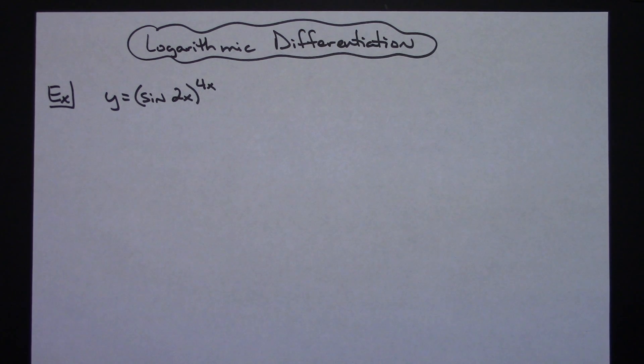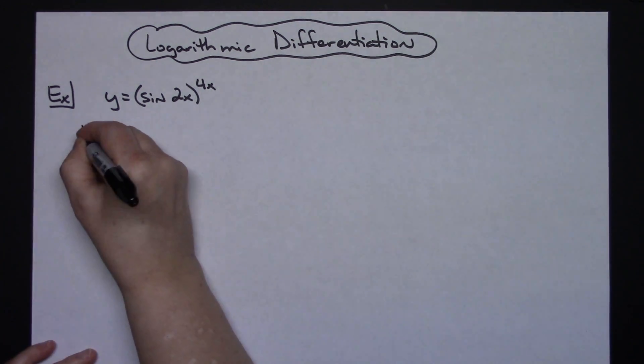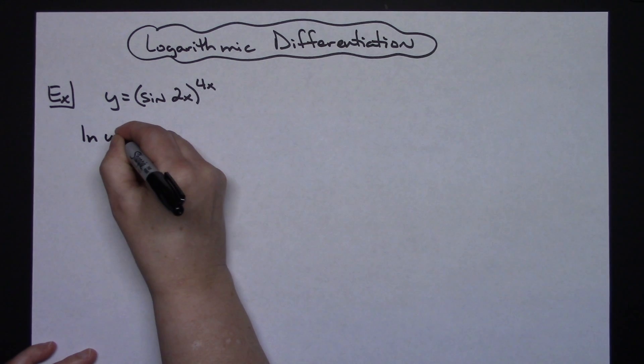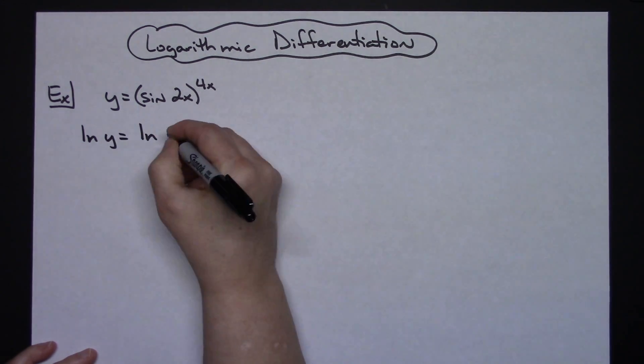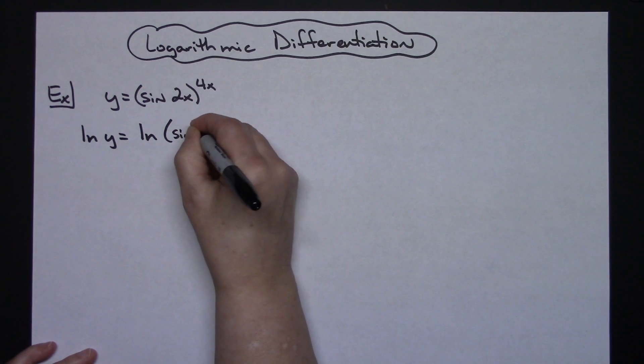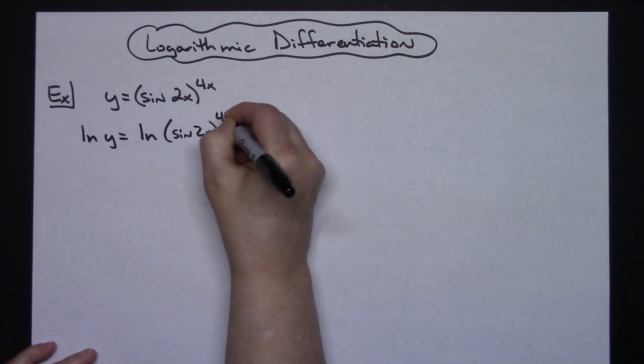First off, we need to take the log of both sides. So I'm going to do natural log of y is equal to natural log of that sine 2x raised to the 4x.